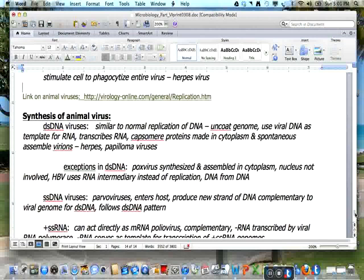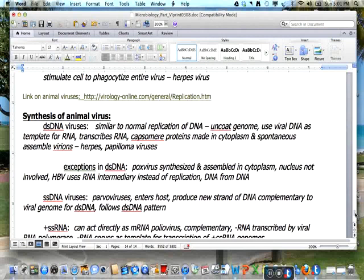Viral synthesis is dependent on the type of genetic material in the virus. Double-stranded DNA viruses have synthesis similar to replication of normal DNA. The viral genome is encoded and the viral DNA serves as a template for RNA.